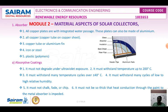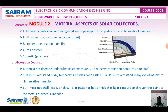Any solar collector should have three major parts. One is the absorber, another is the glazing, and the third is the insulator. These three parts are the major parts of any solar collector.